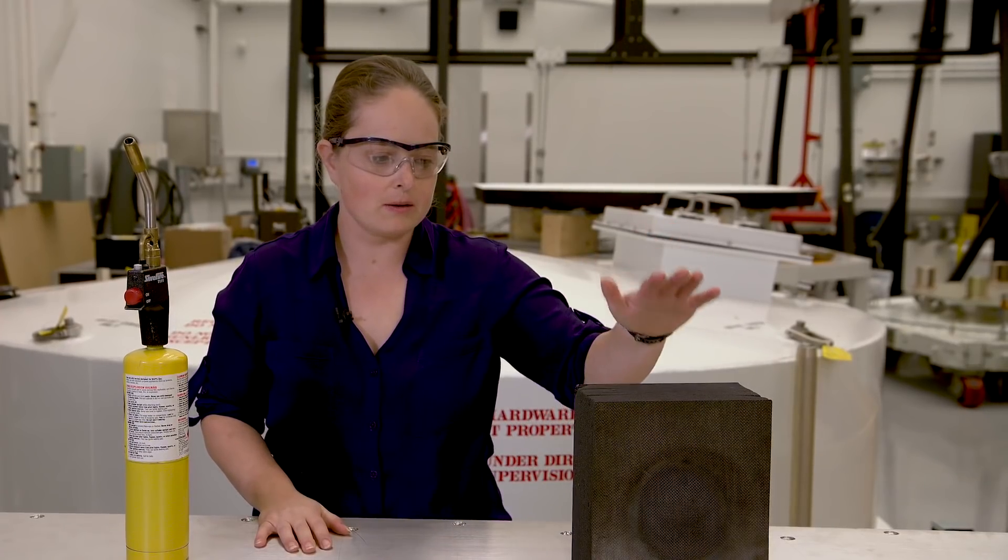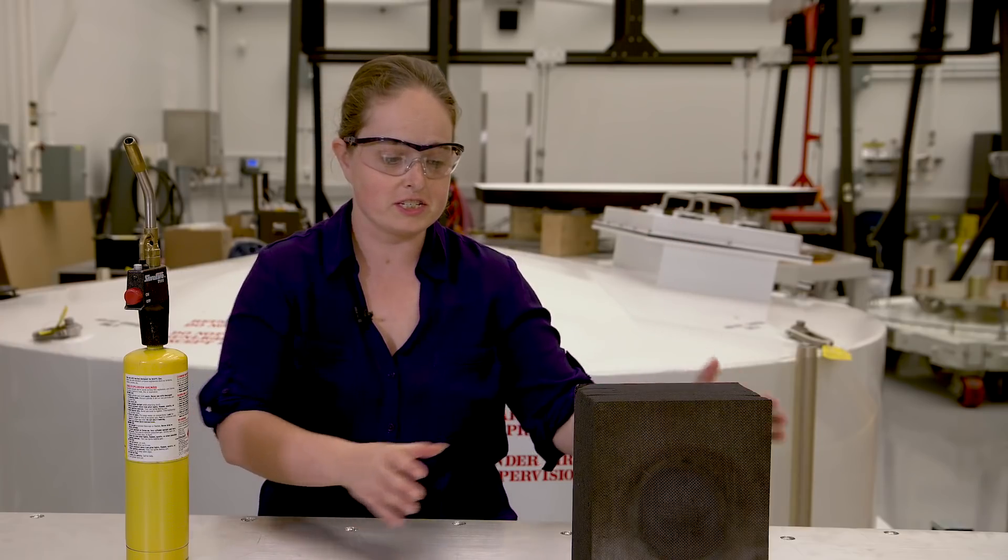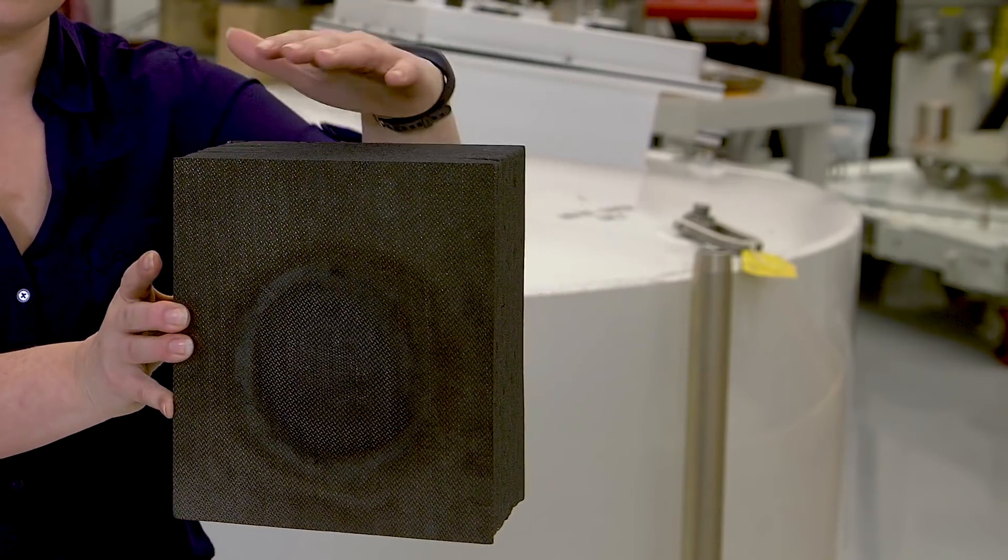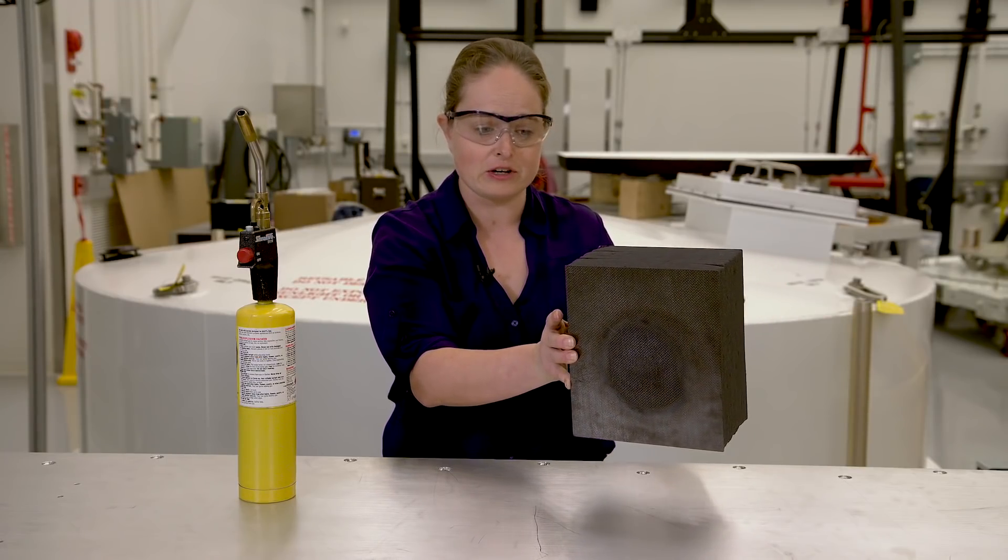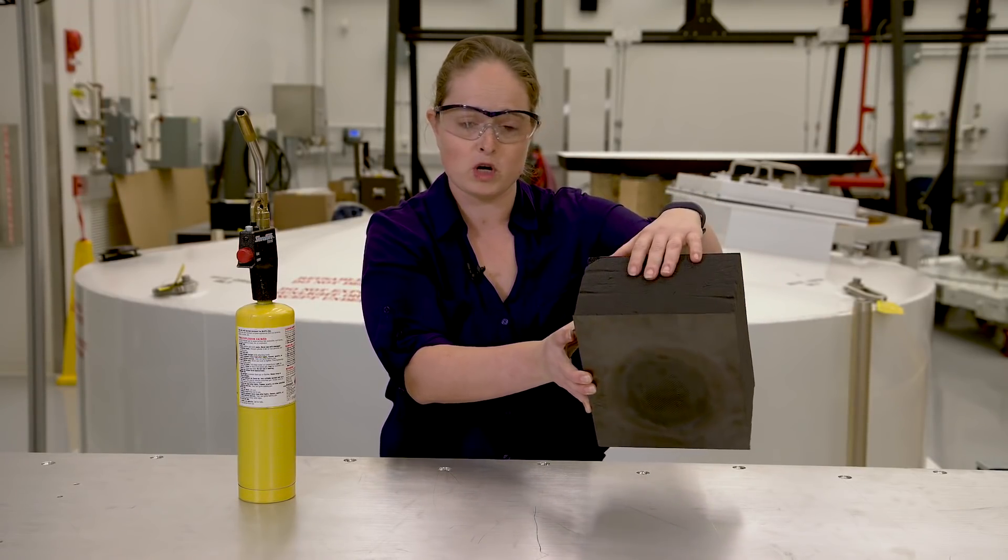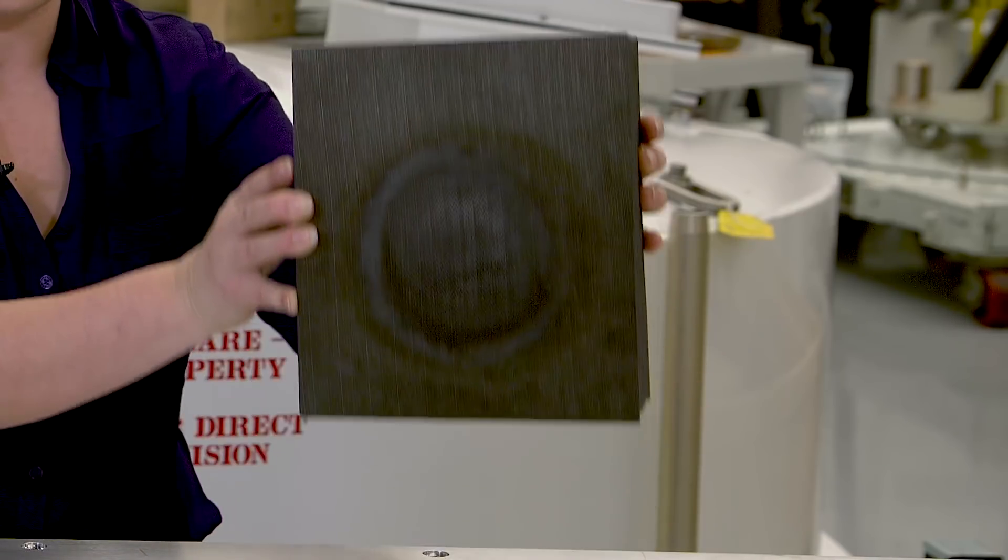Here we have a piece of the heat shield for Parker Solar Probe, which is a sandwich panel made of carbon graphite epoxy like you might find in golf clubs or tennis rackets, some carbon foam, and then another piece of carbon carbon on the back. It's very lightweight as you can see.